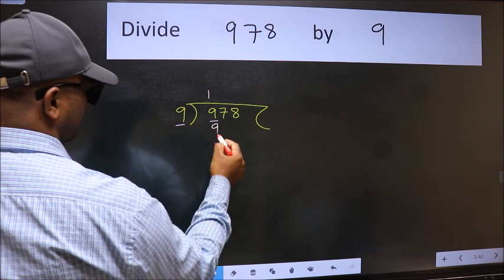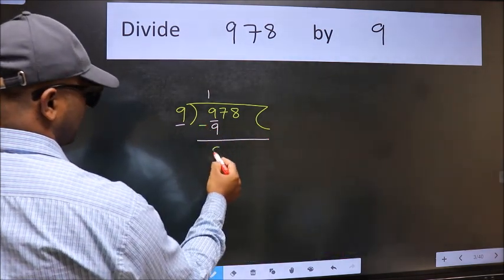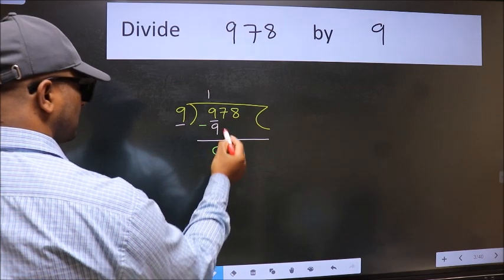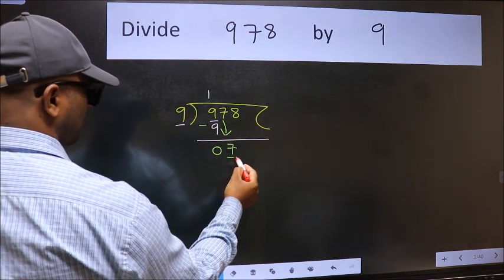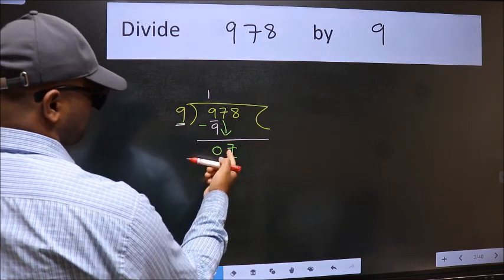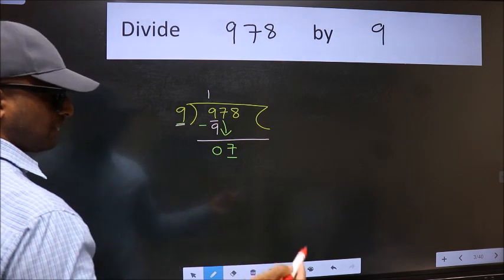9 once 9. Now we should subtract, we get 0. After this, bring down the beside number, so 7 down. Now here we have 7 and here 9. 7 is smaller than 9, so we should bring down the second number.